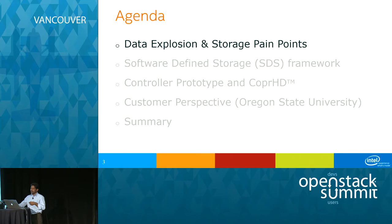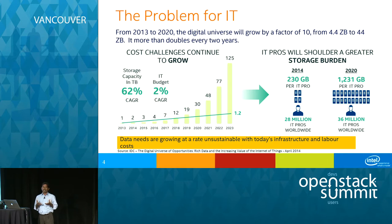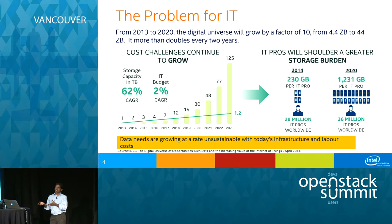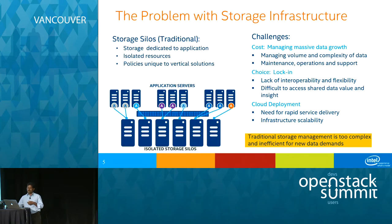Looking at the data explosion problem that IT is facing: the chart on the left shows data is doubling every two years, but IT budget is relatively flat — around 2% or so. Most IT customers I've spoken with confirm flat budgets. So data is doubling, IT budgets are flat, and your operations team is going to take on more burden.